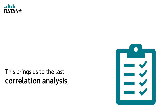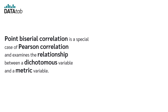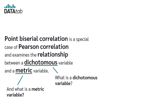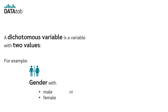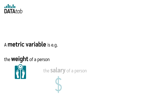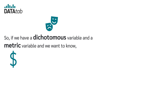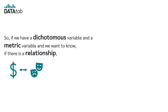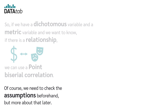This brings us to the last correlation: the point-biserial correlation. Point-biserial correlation is a special case of Pearson correlation and examines the relationship between a dichotomous variable and a metric variable. A dichotomous variable has two values, for example gender (male/female) or smoking status (smoker/non-smoker). A metric variable is, for example, a person's weight, salary, or electricity consumption. If we have a dichotomous and a metric variable and want to know if there is a relationship, we can use point-biserial correlation, after checking the assumptions.